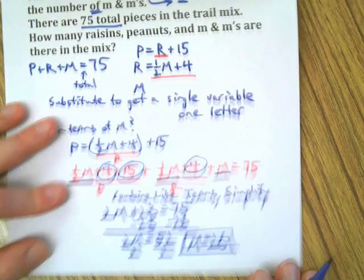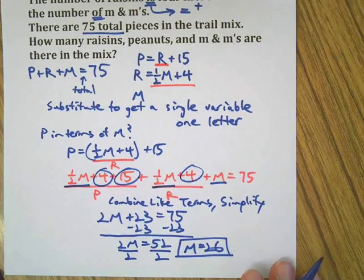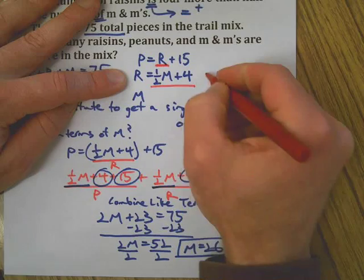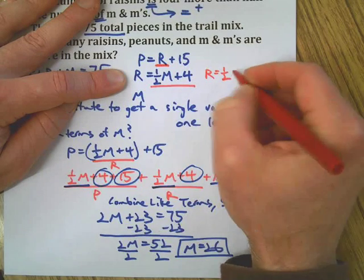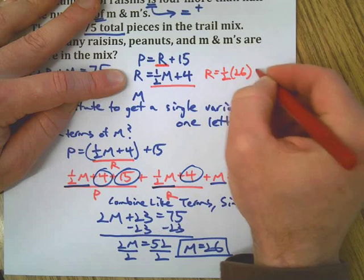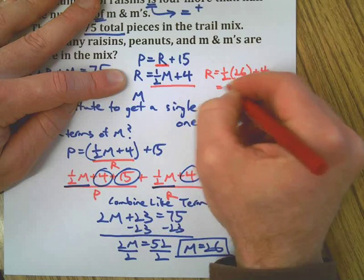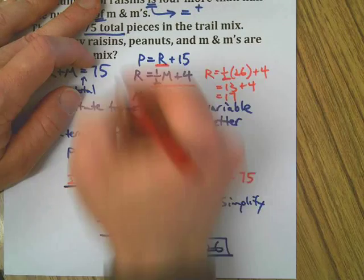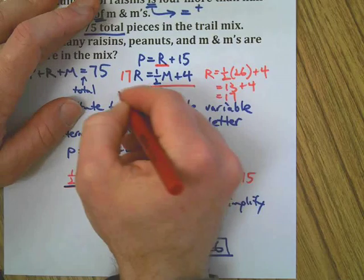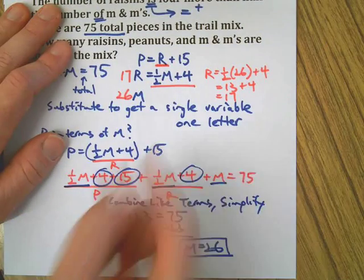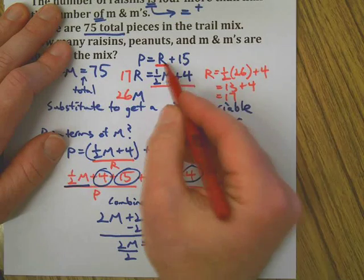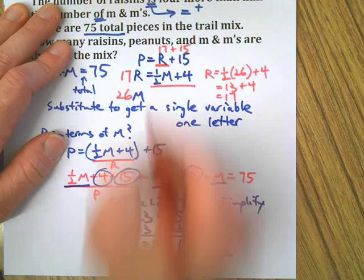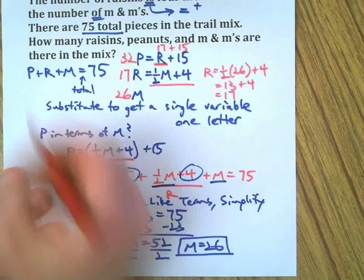I'm going to zoom out a little bit so we get the big picture. Okay, now I need to go back up here and say, okay, so for the raisins I need to take one-half of the number of M&Ms and add 4. That makes 13 plus 4 equals 17—17 raisins, 26 M&Ms.